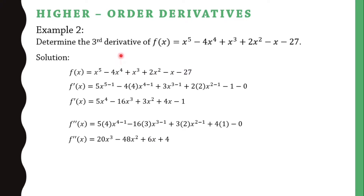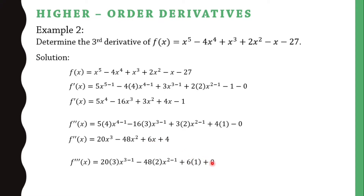We still need to continue to find the third derivative by taking the derivative of the second derivative. That's 20 times 3 is 60, x²; minus 48 times 2 is 96, x; plus 6 times 1 is 6; plus derivative of 4 is 0. So our third derivative is 60x² − 96x + 6.